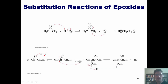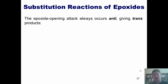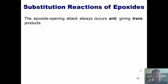I highly recommend that you take a close look at the starting material, the reagents added, and the product so that you can see distinctly where everything came from and where everything ended up. I'm going to show you more reactions of epoxides, but I need to stress something: the epoxide opening attack — the step where the nucleophile comes in and opens up the ring — always occurs anti, which gives trans products.